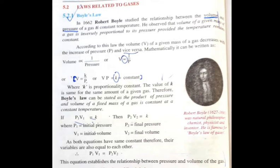Boyle's law can be stated as product of pressure and volume of a fixed mass of gas is constant at constant temperature. If we have initial pressure and initial volume, then P1 V1 is equal to K. Then final volume and final pressure will be P2 V2 is equal to K.